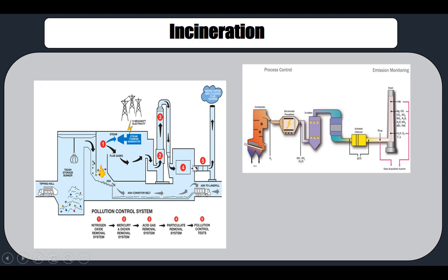The flue gases contain very harmful products which go through the stack. There are quite a lot of pollution control technologies before the gas is released into the air. These are listed step by step — including electrostatic precipitators, scrubbers, and activated charcoal, to name some of the most important air pollution control technologies.